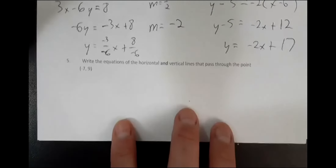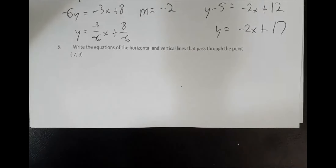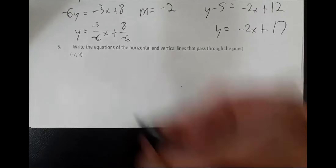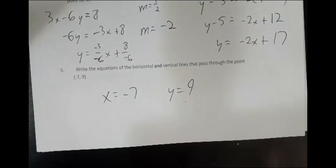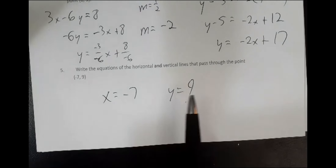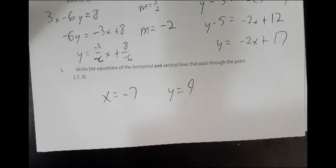Let's do problem five. I should have made you label which line is horizontal and which is vertical. This one's vertical, this one's horizontal. Most people got the labels right; there was one person who got them wrong, but I didn't count off because I didn't ask for it — I don't want to take off points for things I didn't ask.